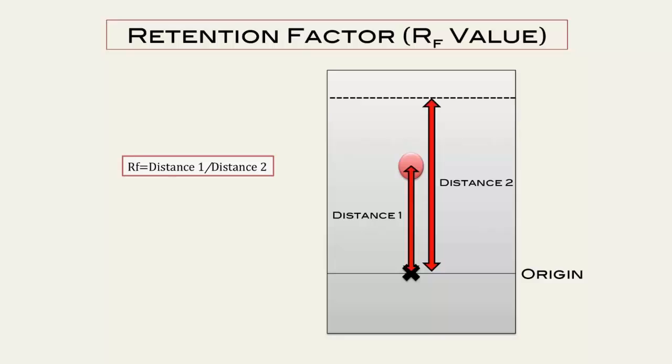We measure something called the RF value for each spot, which is a ratio of how far the compound has traveled from the center of the spot relative to the solvent front.